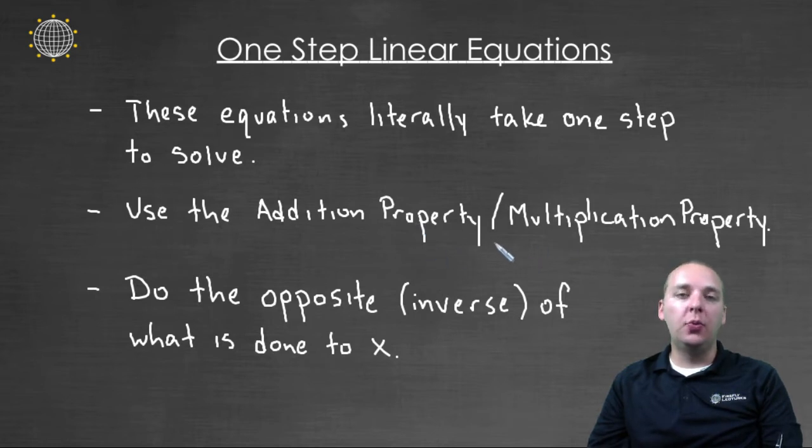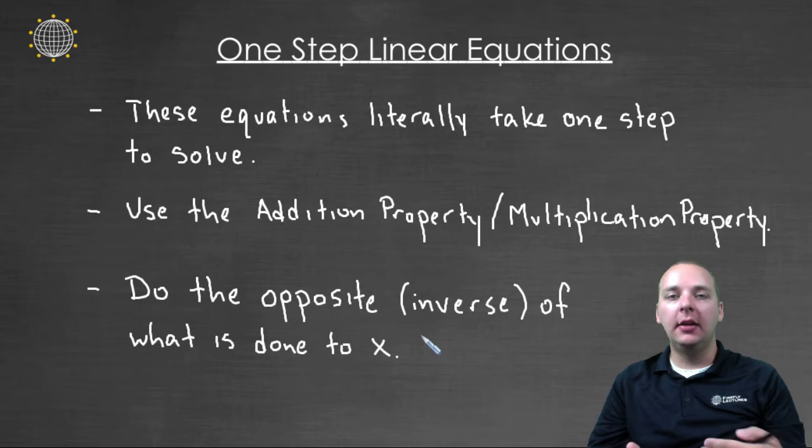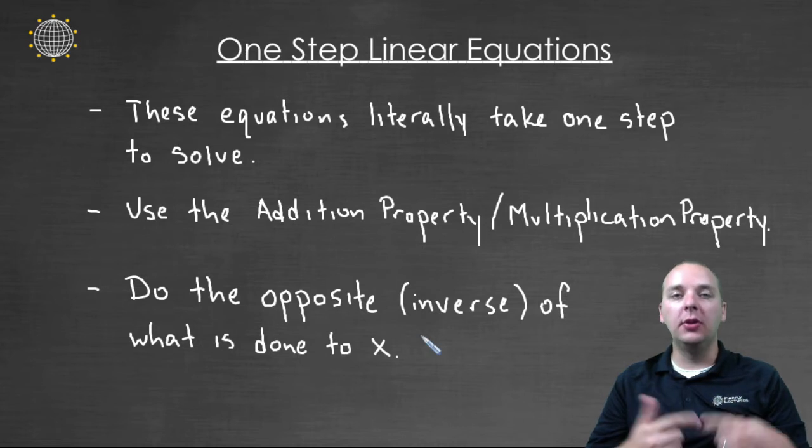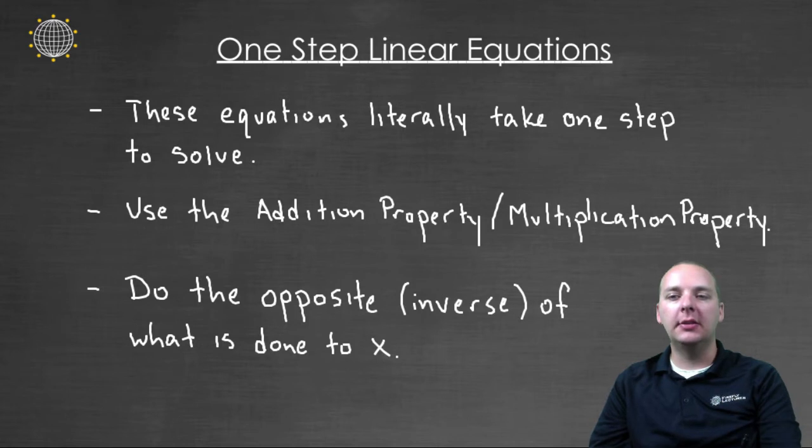The way that you know which property to use is you're going to be doing the opposite of whatever is done to x. And the mathematical word for this is the inverse operation. So for example, if x is being added by something, we're going to subtract. Or if it's multiplied, we're going to divide. We're always going to do the opposite of whatever is done to our variable, and that's what's going to help us solve for x.